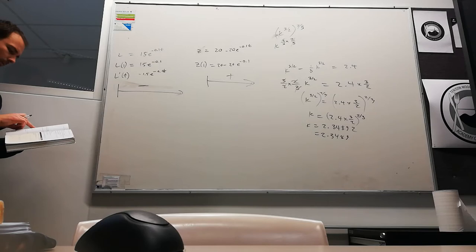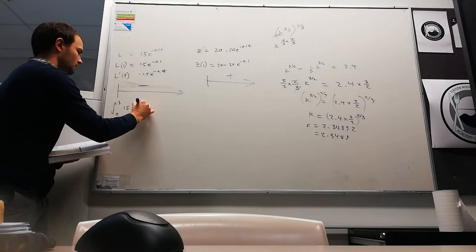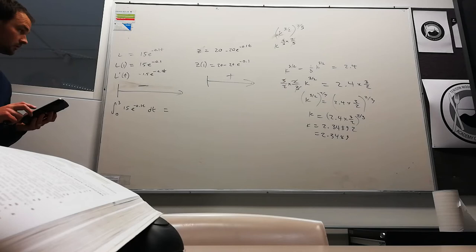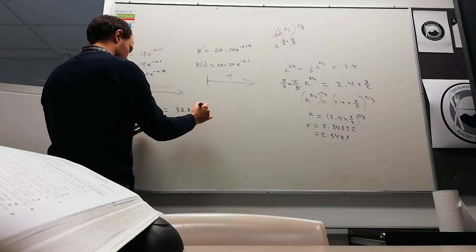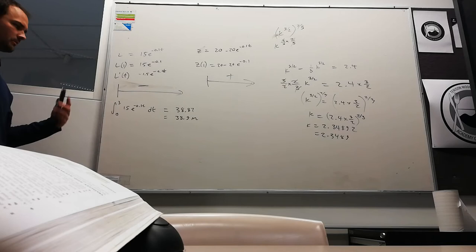Okay, find the integral from 0 to 3 of v of 1. Now, v1 is the lion. So the integral from 0 to 3 of a lion. Let's just put that in the calculator. It doesn't ask us to do it exactly. From 0 to 3, 38.877. 38.9 meters. So that's the lion's velocity, and so that's how far the lion travels in the first three seconds.